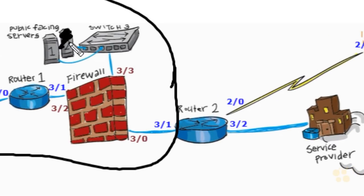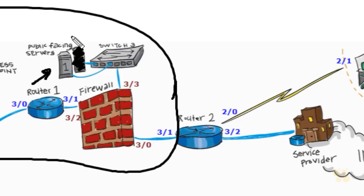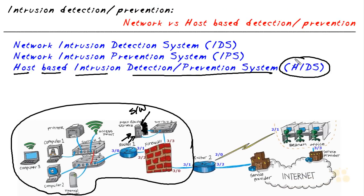However, in our environment, let's say we have one web server and only need to protect that one server — not an entire network of devices. Maybe we decide to do the intrusion detection/prevention in software running on that server. Software acting as intrusion prevention or detection running on just that server is referred to as a host-based intrusion detection/prevention system. The acronym is HIDS — it really should be HIDPS, but that's hard to pronounce — so it's referred to as HIDS, host-based intrusion detection system.